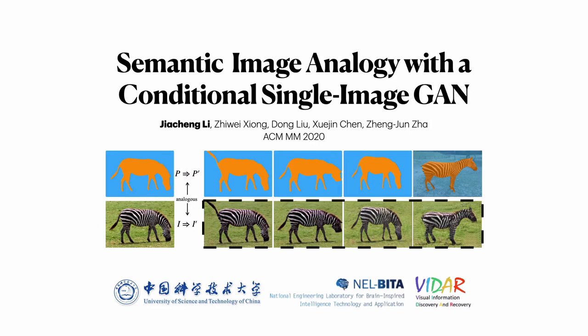Hello, I'm Li Jacheng from the Vidar group of USTC. I will present the paper 'Semantic Image Analogy with a Conditional Single Image GAN.' This is a joint work with Xiang Jui, Lu Dong, Chen Shui-jin, and Zha Jung-jun.